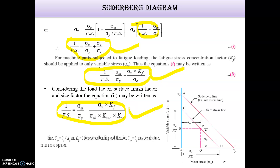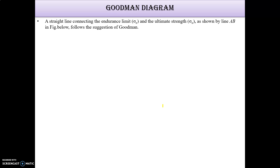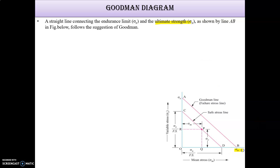The Soderberg and Goodman diagrams are very similar. The only difference is that Soderberg uses yield strength while Goodman uses ultimate tensile strength (Sigma U). In the Goodman diagram, Sigma U replaces Sigma Y on the x-axis. The endurance limit remains at point A on the y-axis, and a line AB is drawn between them. Dividing Sigma E and Sigma U by the factor of safety gives points C and D respectively.